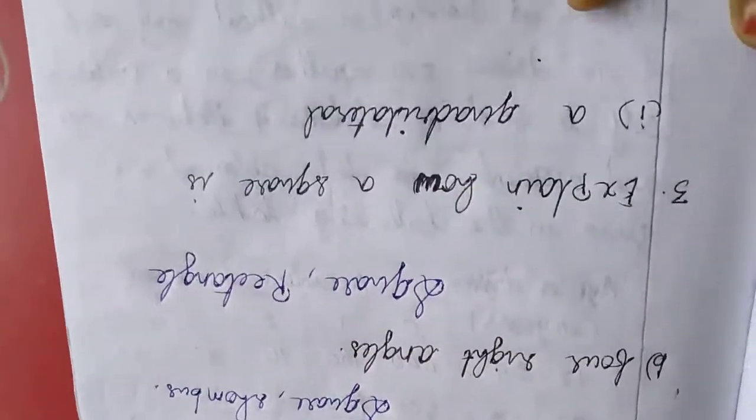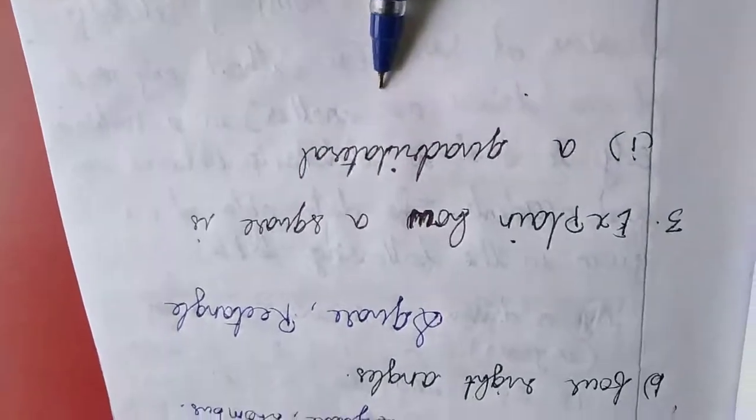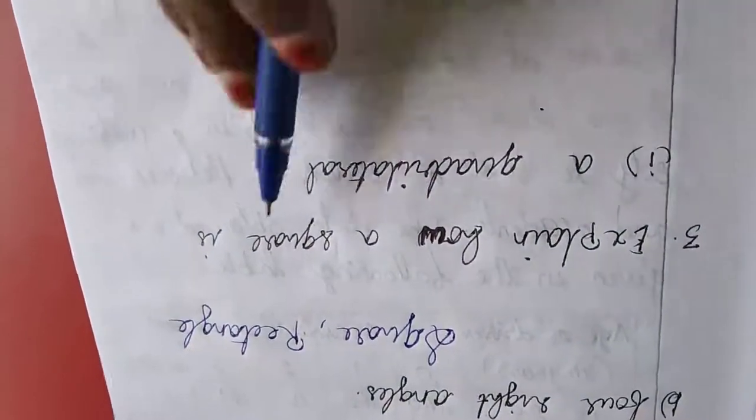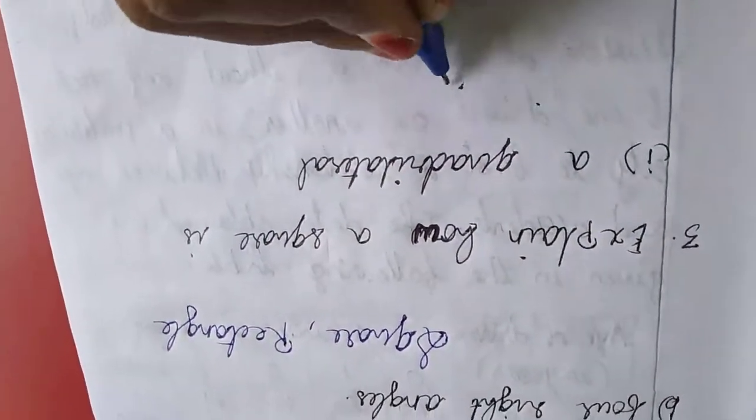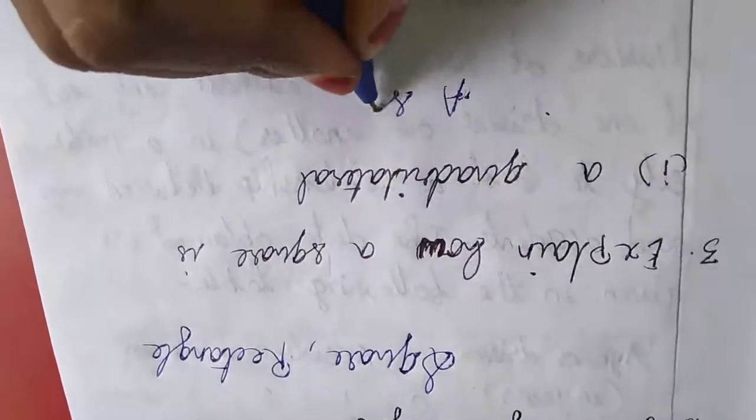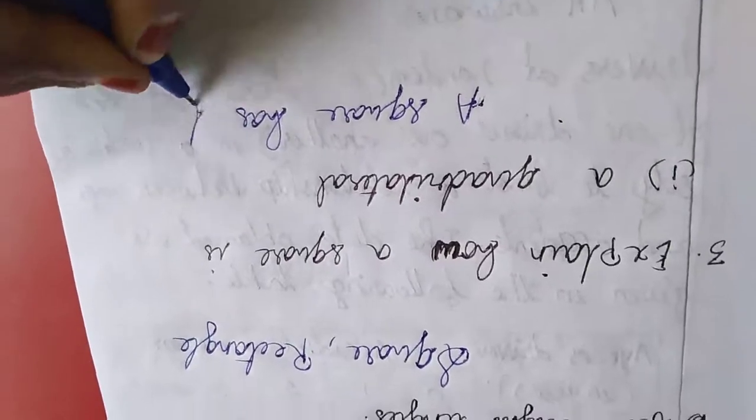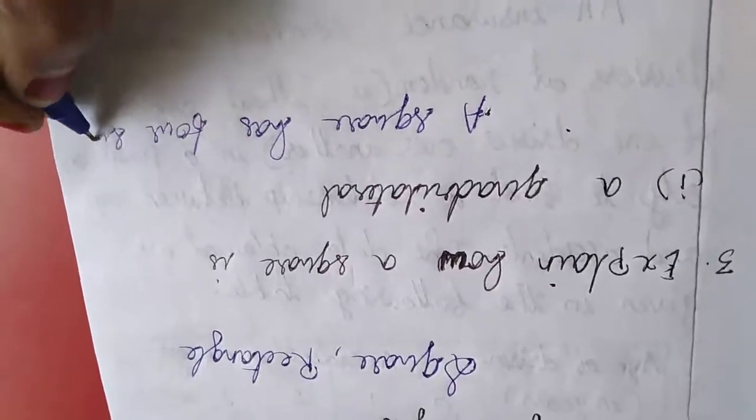Now third sum, explain how a square is a quadrilateral. A square has four sides, so it is a quadrilateral.